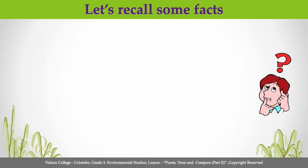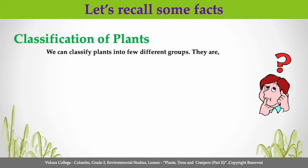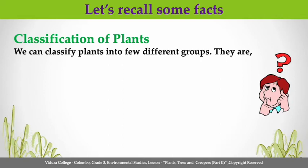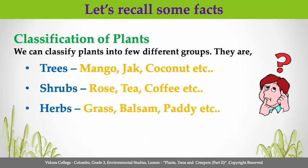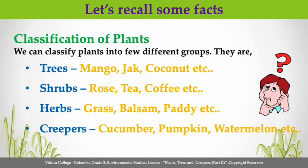Can you remember children? We learned classification of plants. As we learned, we can classify plants into a few different groups. Do you remember the groups? Okay children, here are the groups: trees, shrubs, herbs, and creepers. In here, mango, jack, and coconut are some examples for trees.